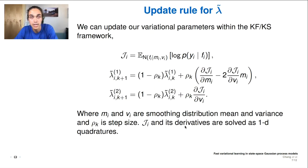But how do we then update these lambda tildas? This is actually not too hard within the Kalman filter, Kalman smoother state space framework. All we need to solve are these 1D quadratures of the log likelihoods, and then set a step size. So we would perform Kalman filter, Kalman smoother, and then update our approximate likelihoods at the end after we perform the smoother step.